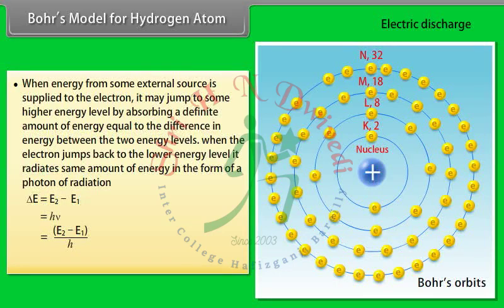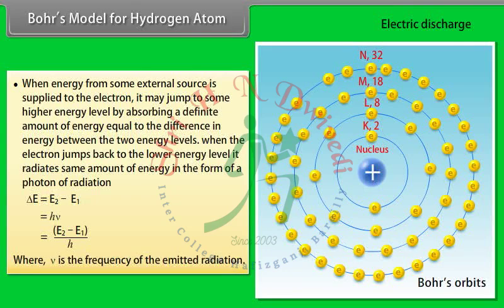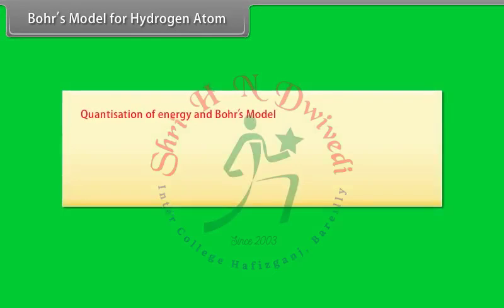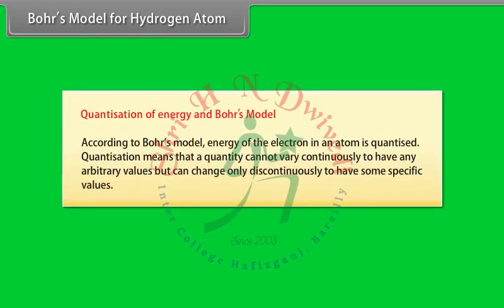Nu = (E₂ − E₁)/h, where nu is the frequency of the emitted radiation. According to Bohr's model, energy of the electron in an atom is quantized. Quantization means that a quantity cannot vary continuously to have any arbitrary values, but can change only discontinuously to have some specific values.